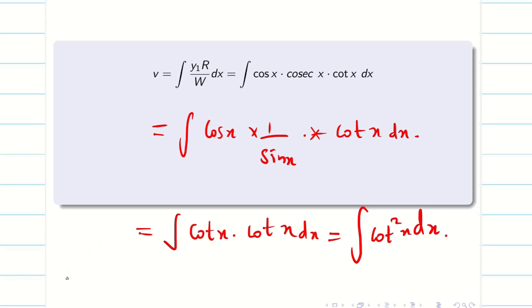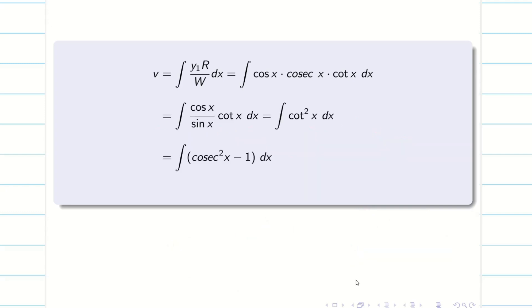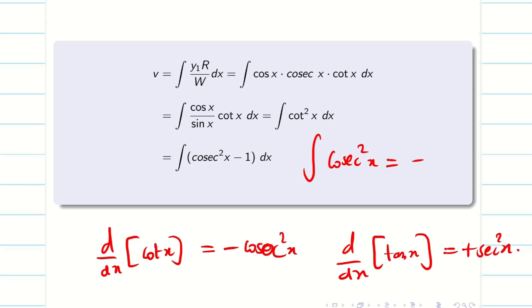Just remember 1 + cot² θ = cosecant² θ. So cot² x can be written as cosecant² x - 1. Now we remember differentiation of cot x is -cosecant² x. Similarly differentiation of tan x is +secant² x. So integration of cosecant² x is -cot x. Whatever we learned in school we are using now. And minus 1 is simply -x. Now v is also done.